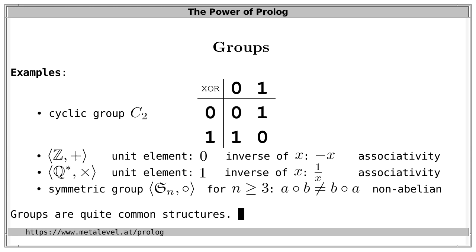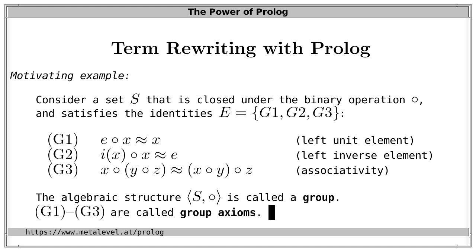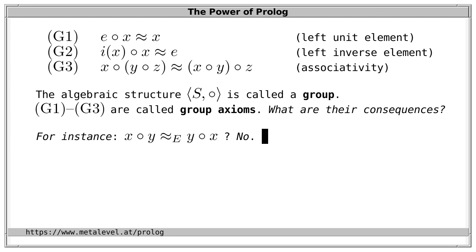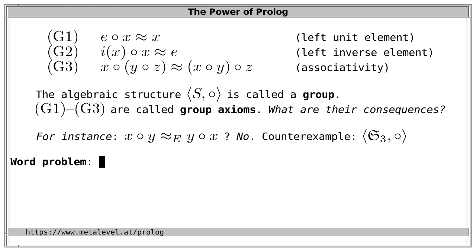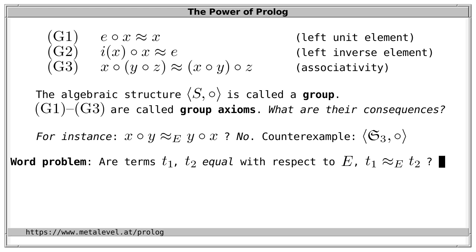Groups are quite common structures, and everything that satisfies these axioms is called a group. It is natural to ask: what are the semantic consequences of these axioms? That is, which properties are satisfied by every group? For instance, is every group commutative? No — we have just seen that there are non-abelian groups, such as the symmetric group of order 3. We are interested in a generalization of this question called the word problem: given any two terms t1 and t2 and an equational theory E, decide equality of two terms modulo E.